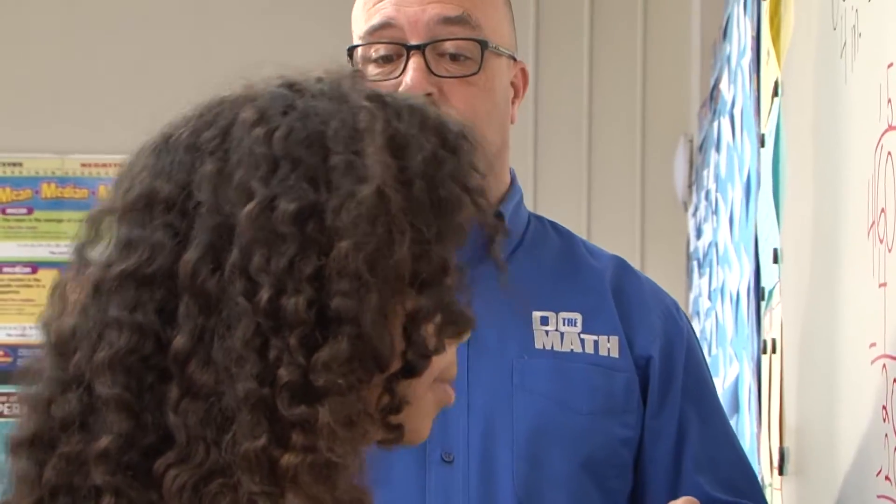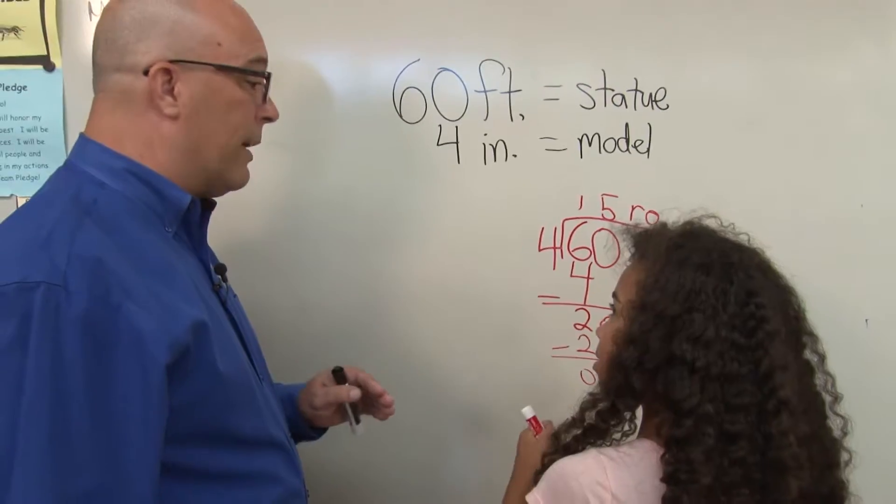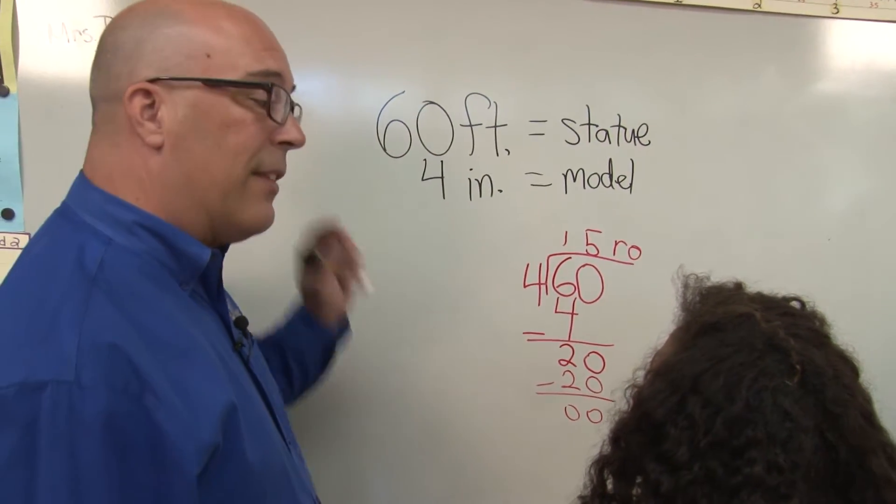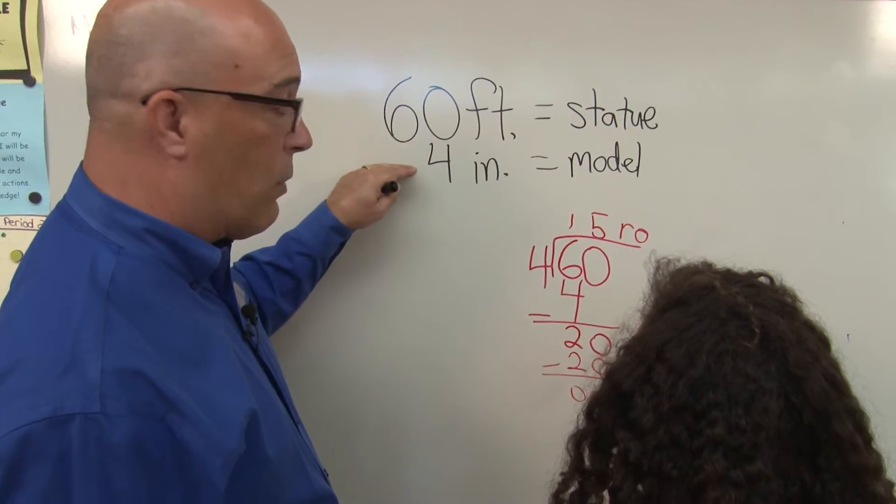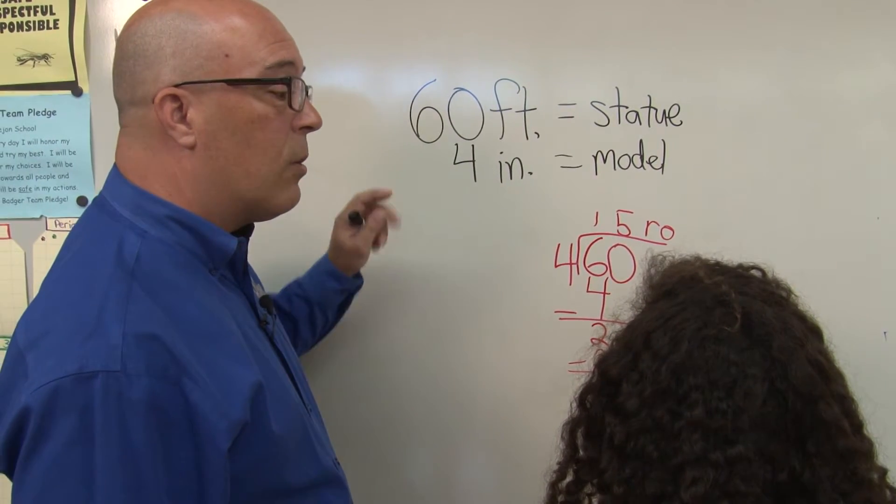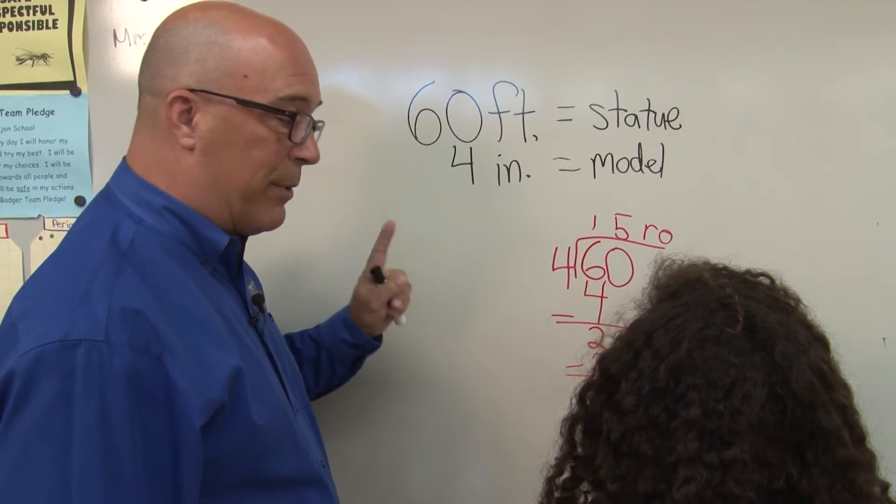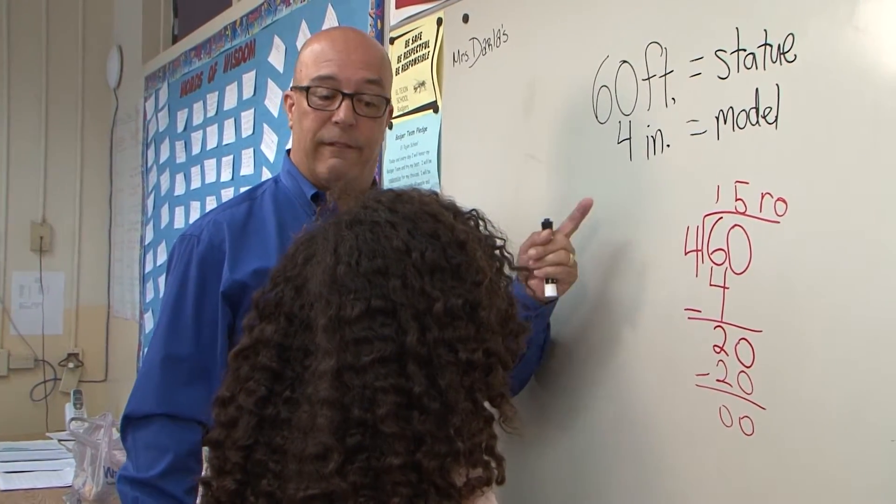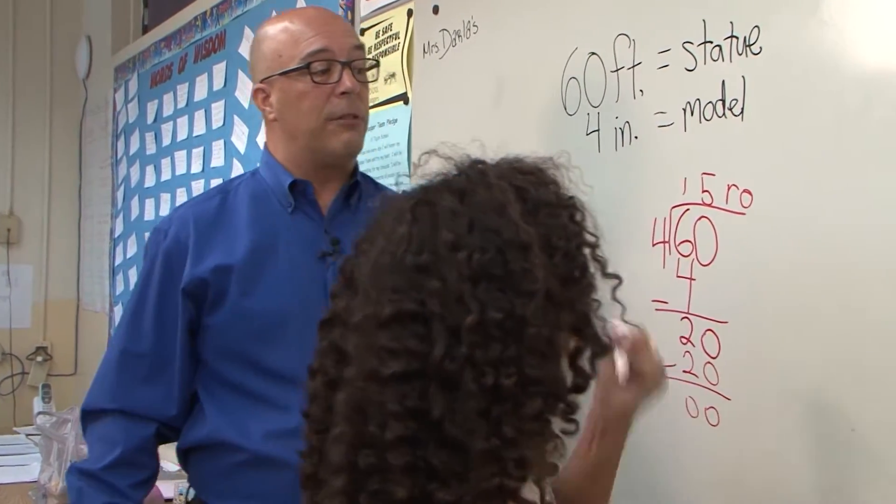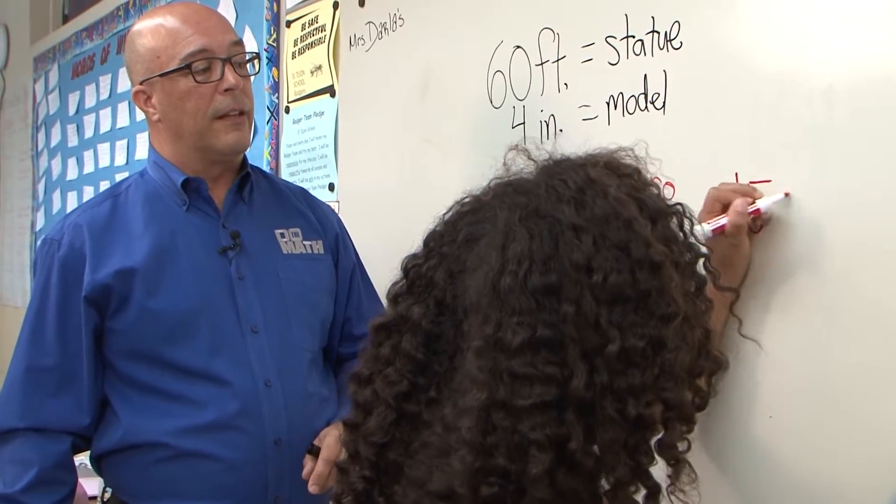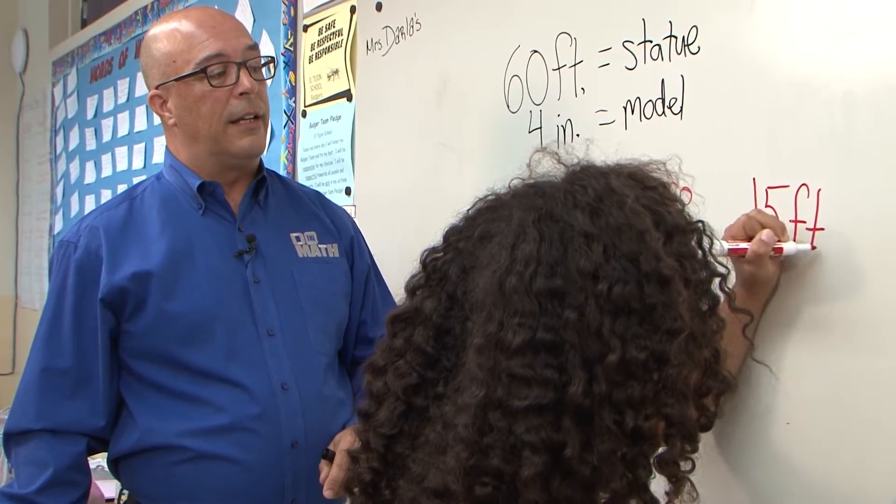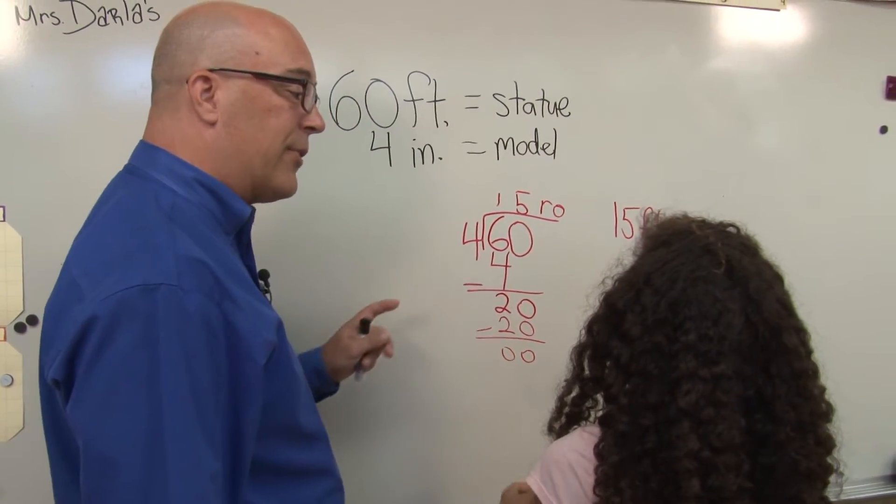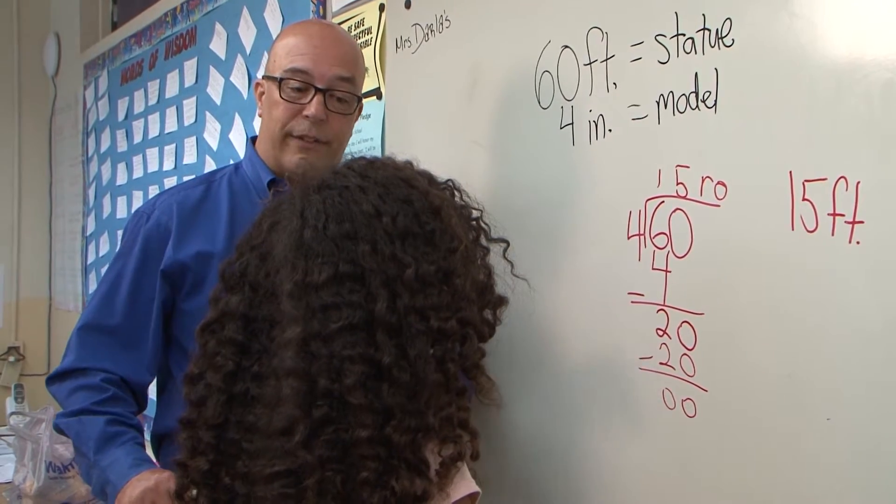Okay. So what is the answer? 15. 15 what? Okay. So think about the question again. So it says we have a 60 foot statue and the scale model is 4 inches. The model is 4 inches. All right? And we want to know what 1 inch represents in feet. So 1 inch is how many feet represented? 15 feet. 15 feet. So over here on the side, let's go ahead and put 15 feet.